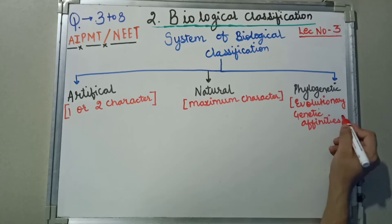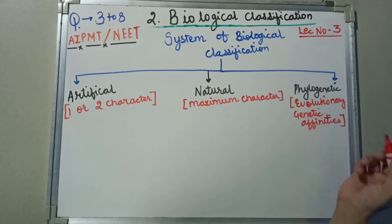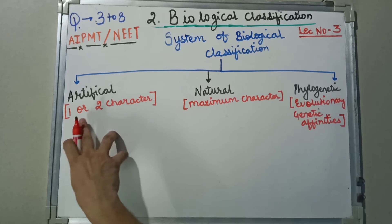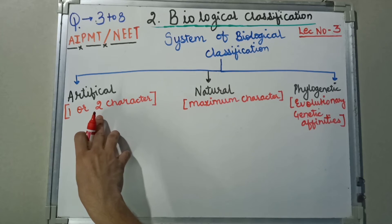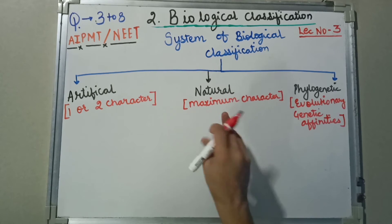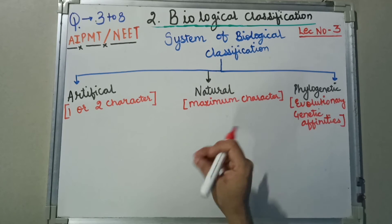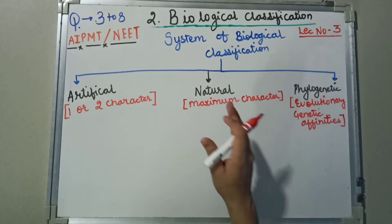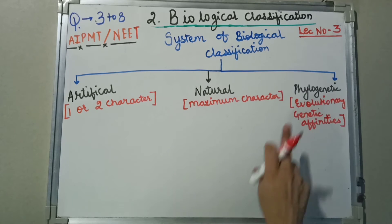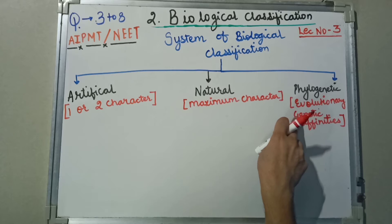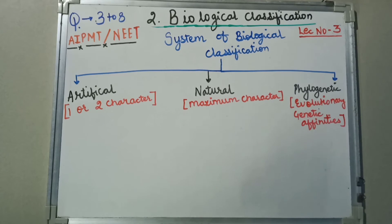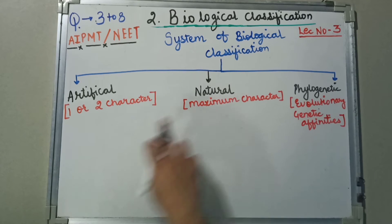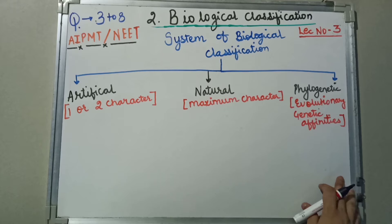So in phylogenetic classification, we try to look at evolutionary basis. Now let's see the names of the scientists who worked under artificial classification, natural classification, and phylogenetic classification.